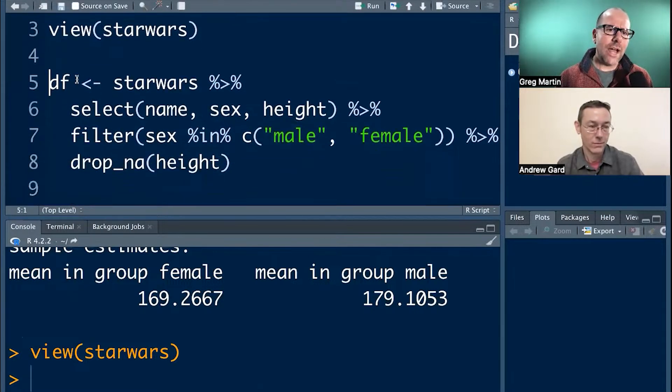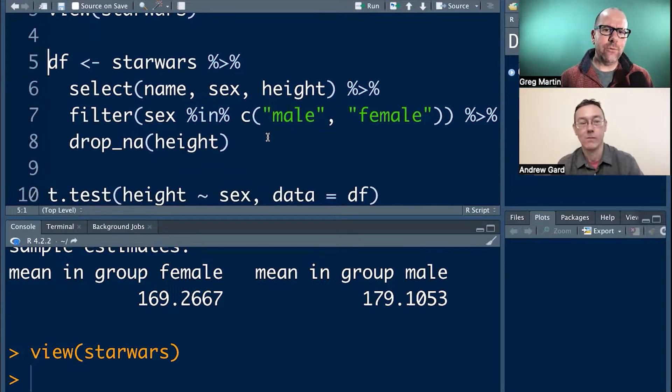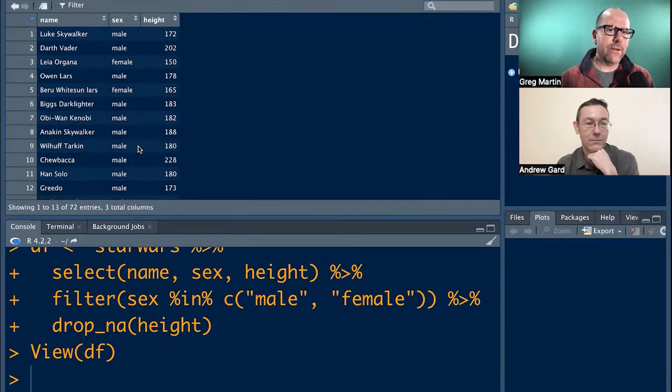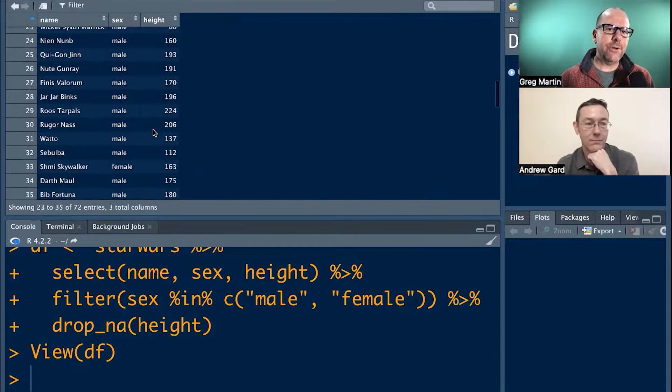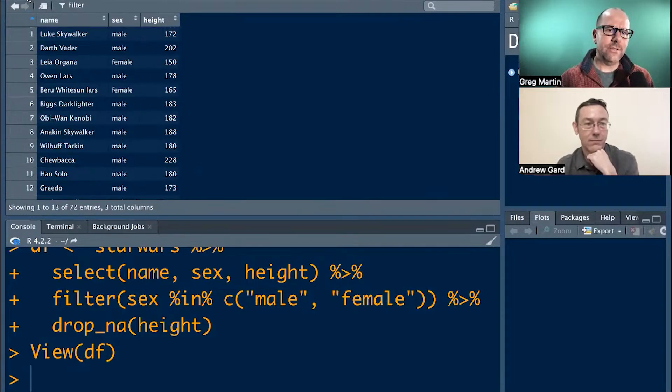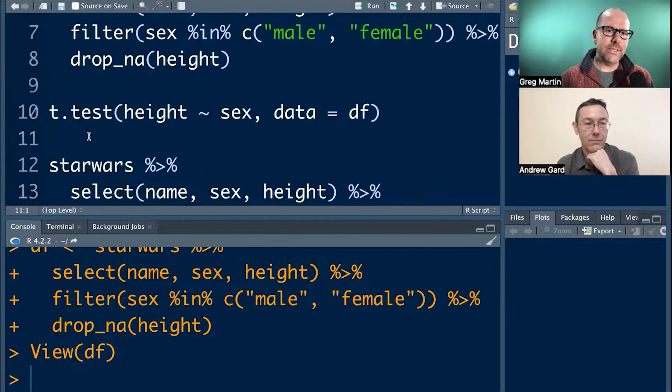And we've all done this a million times. We start off by creating a new data frame or a new data object. We've got Star Wars. We're selecting just name, sex, and height, filtering for just males and females and then dropping the NAs out of height. And of course, if we run that code and then call that data frame, here's the new data frame that we've got. And it's pretty easy to run a t-test comparing the height of the males and females to do that.